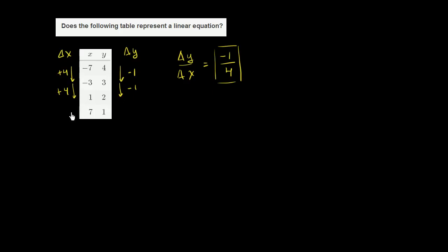Now let's look at this last point. When we go from 1 to 7 in the x direction, we are increasing by 6. And when we go from 2 to 1, we are still decreasing by 1. So now this ratio,